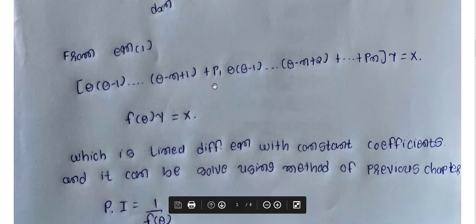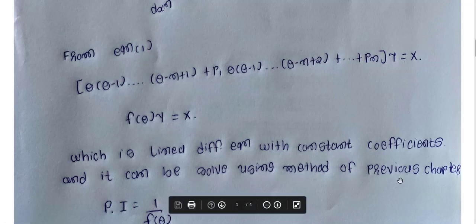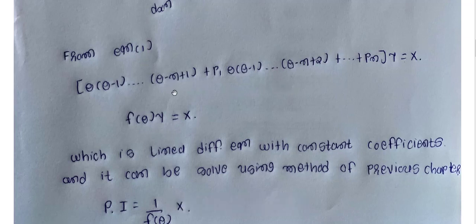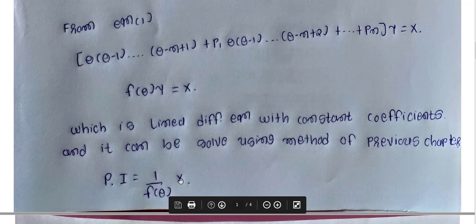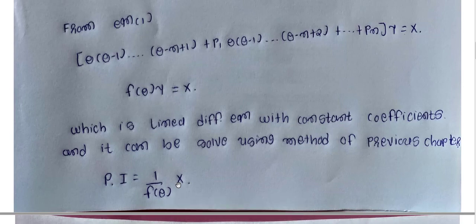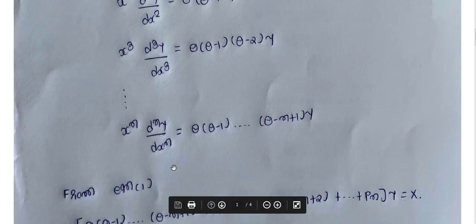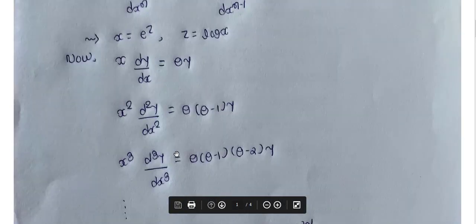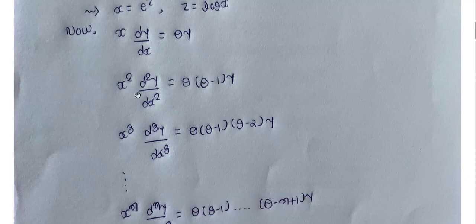This equation can be solved using the method of the previous chapter (unit). For finding the particular integral, we use PI = 1/F(θ) · X, where X is a function of x. This same method applies here to find the particular integral for the linear differential equation with variable coefficients (Cauchy-Euler type), where we replace x dy/dx with θy, x² terms with θ(θ−1)y, and so on.